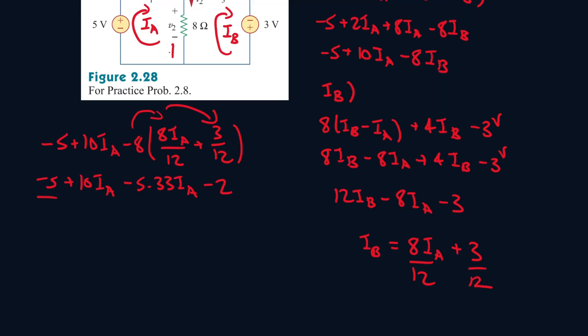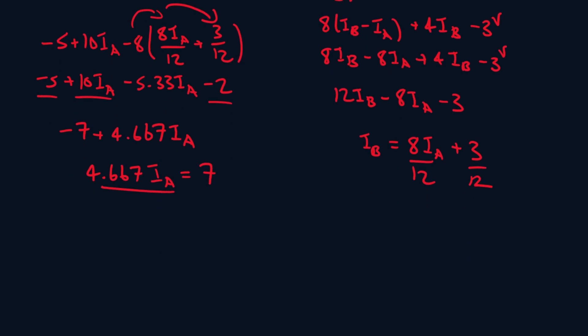So let's collect like terms. Minus 5 minus 2, that's minus 7. And 10 minus 5.33, that's 4.667. Okay, let's bring the 7 to the other side. So we have 4.667 IA equals 7. Divide both sides by 4.667.